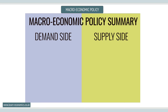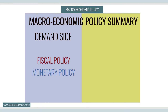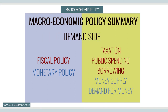On the demand-side, we have fiscal and monetary policy. Fiscal policy uses taxation, public spending, or borrowing to achieve changes in aggregate demand. Monetary policy attempts to influence aggregate demand by expanding or contracting economic activity through the regulation of the supply or the demand for money. In a modern economy, fiscal policy is the responsibility of government, while monetary policy is the responsibility of the central bank.